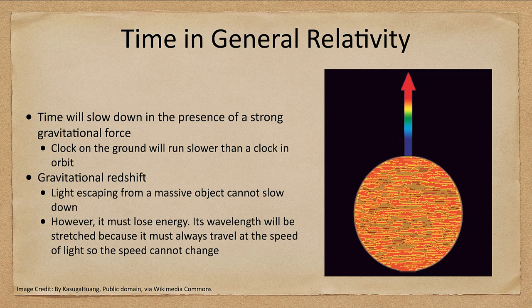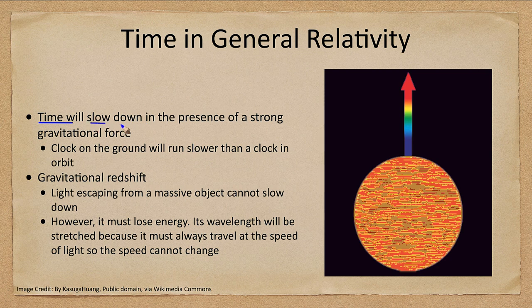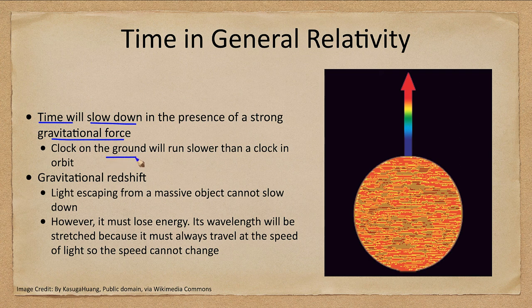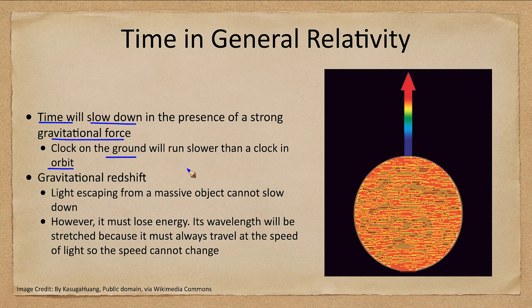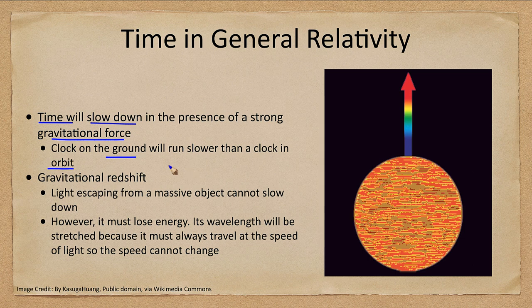Now how about time? We've looked a little bit about what happens to space. What happens to time under general relativity? Time will slow down in the presence of a gravitational force, and that means a clock on the ground will run slower than a clock in orbit. Or if you're in a building, if you're on the second, third, fourth, fifth floor, the higher up you are, then the faster your clock will run. Now it's not going to be very measurable over that kind of distance, but from orbit it's actually measurable.